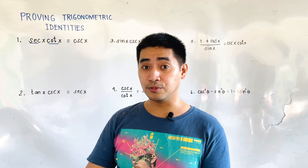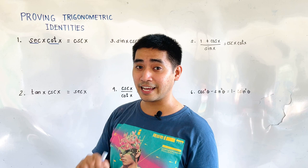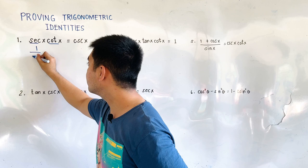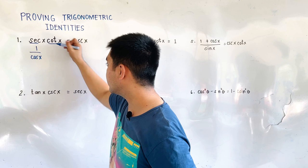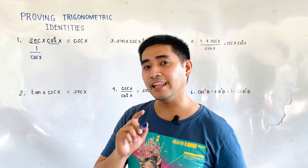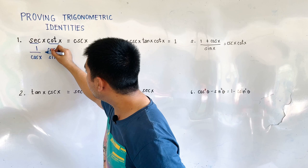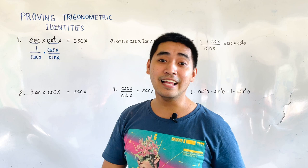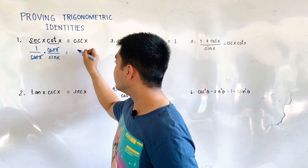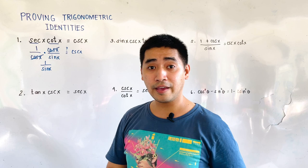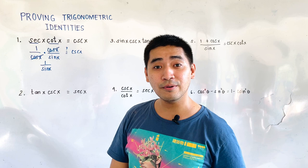Can we reduce secant in terms of sine and cosine? Yes, because we can reduce this using the reciprocal identity, which is equal to 1 over cosine of x. For cotangent, the equivalent value from the quotient identity is cosine of x over sine of x. Multiplying these two terms, we can cancel out cosine of x, leaving us with 1 over sine of x. And 1 over sine of x by the reciprocal identity is equal to cosecant of x.